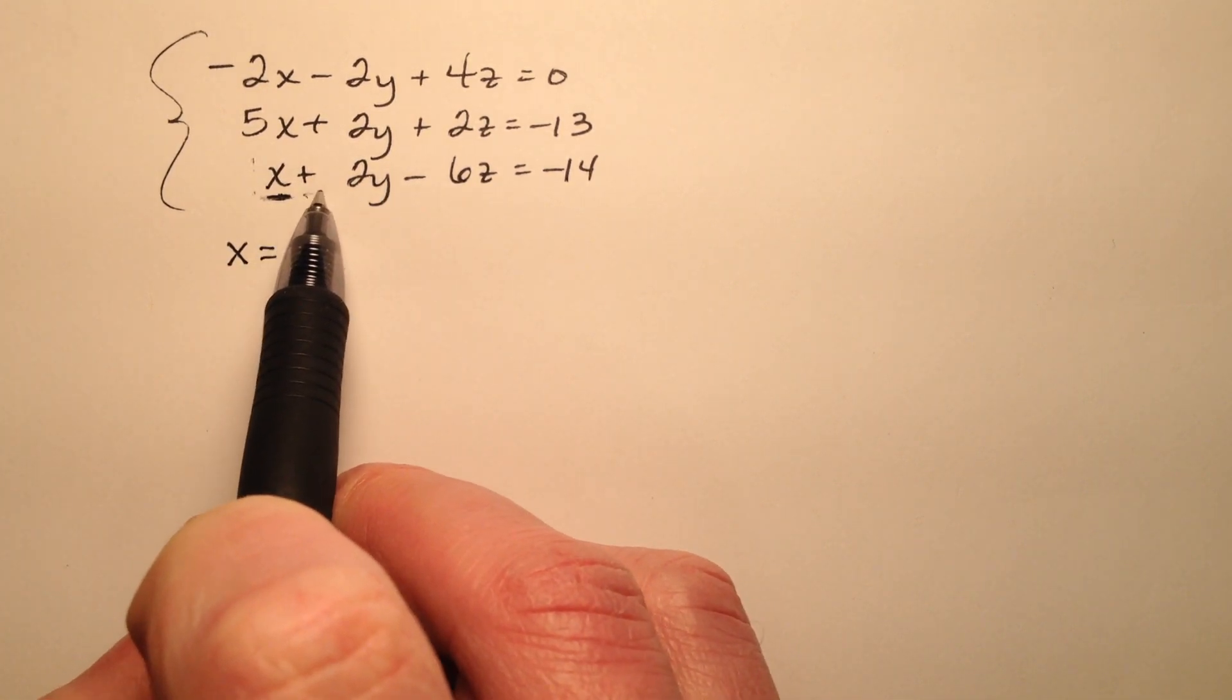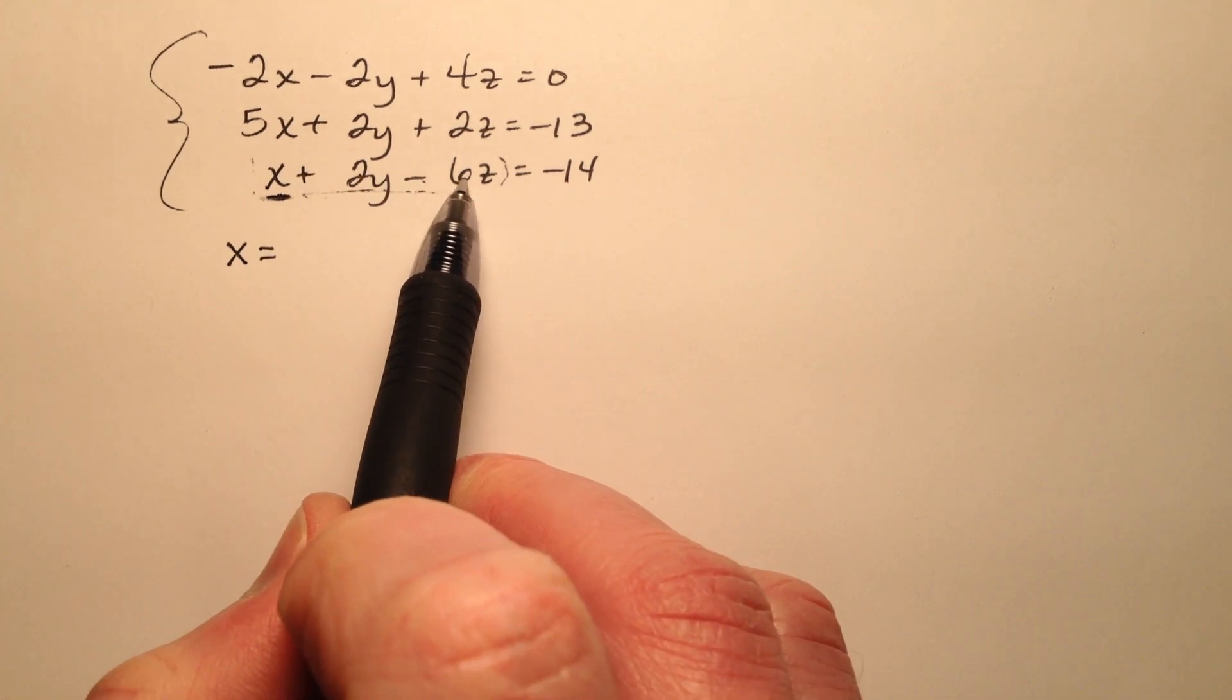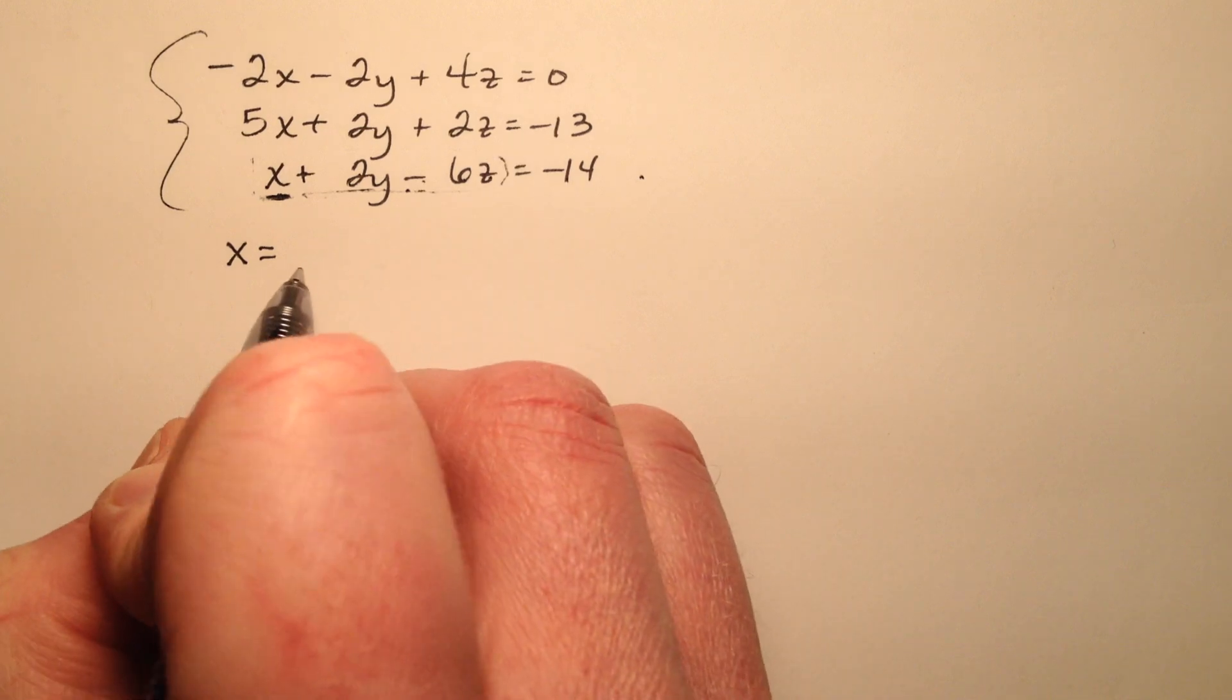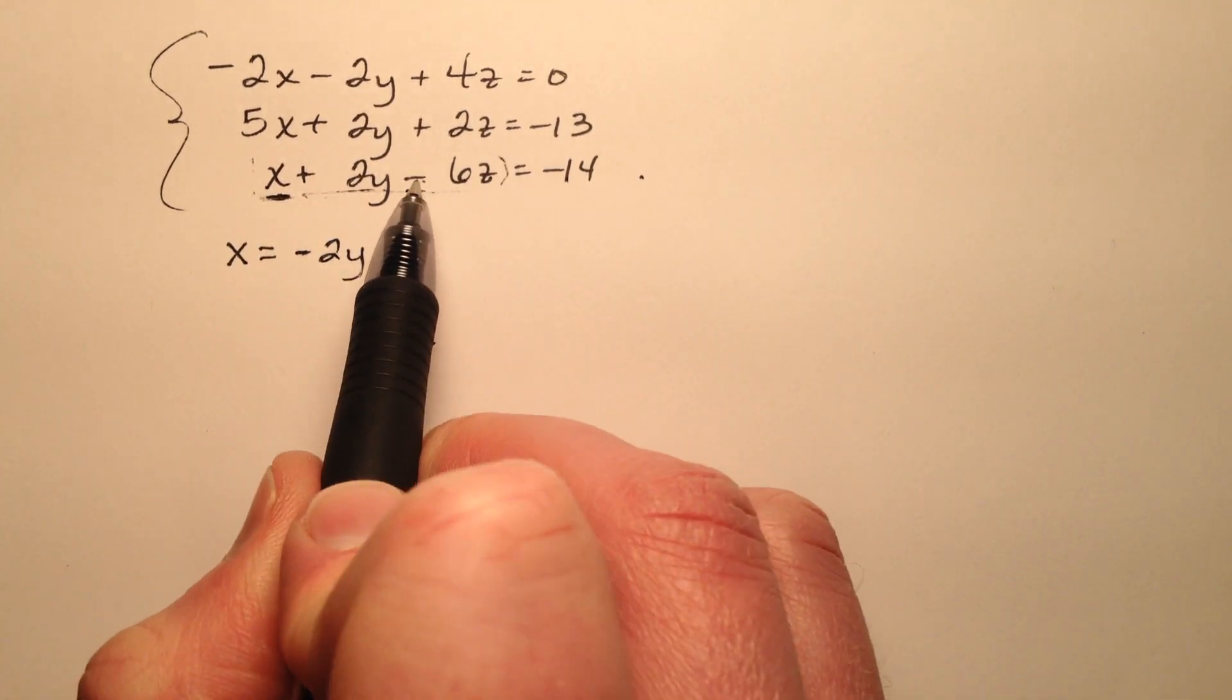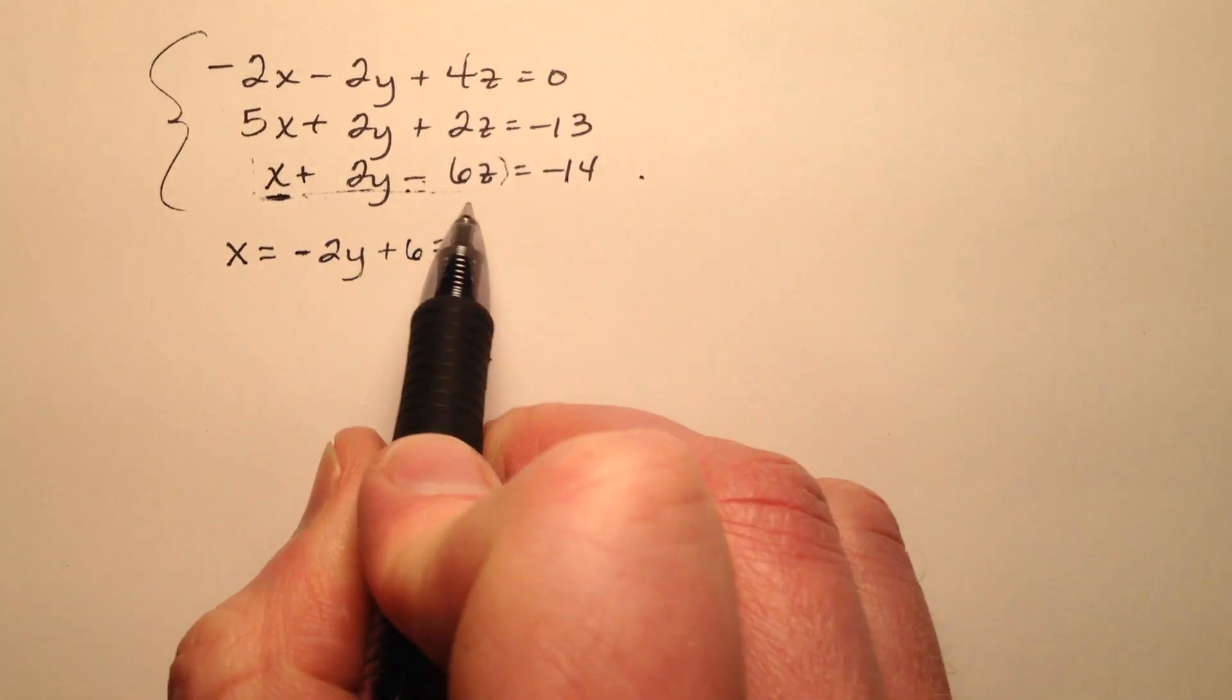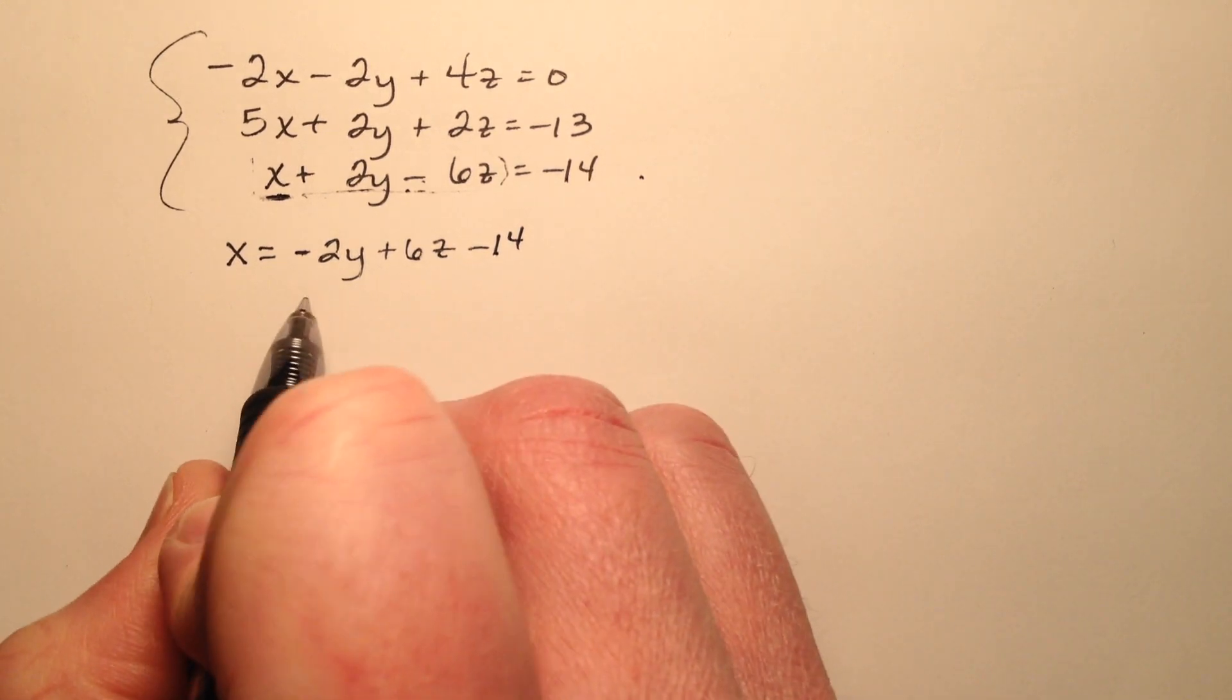So x equals - what I'm going to do is take these other two terms, this plus 2y and this minus 6z, and I'm going to move them from the left side to the right side. So the positive 2y becomes a negative 2y. The negative 6z becomes a positive 6z, and this negative 14 is already over there.